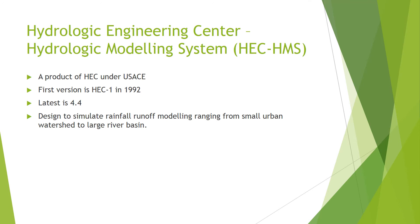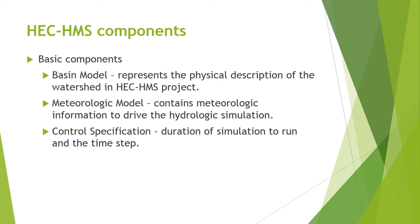HEC-HMS is a product of the Hydrologic Engineering Center under the United States Army Corps of Engineers. The first version was HEC-1 in 1992, and the latest version is 4.4. HEC-HMS is designed to simulate rainfall-runoff modeling ranging from small urban watersheds to large river basins. HEC-HMS has three basic components: the basin model, which represents the physical description of the watershed; the meteorologic model, which contains meteorologic information to drive the hydrologic simulation; and the control specification, which controls the duration of the simulation and the time step.